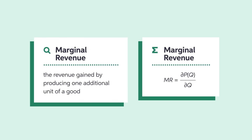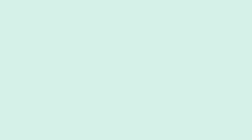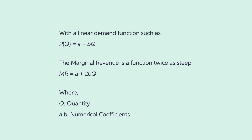Now let's focus on an important concept: what is the marginal revenue? The marginal revenue is the revenue gained by producing one additional unit of a good. It is calculated as the first derivative of the demand function with respect to quantity. When the demand function is linear, like in our example, the marginal revenue of a monopolist is always a function twice as steep as demand.